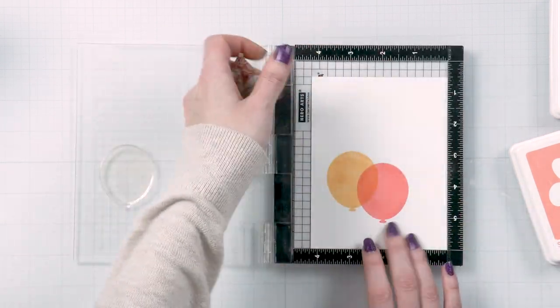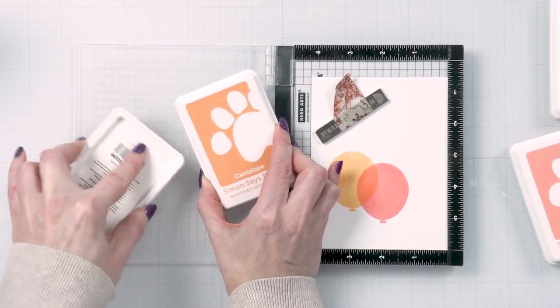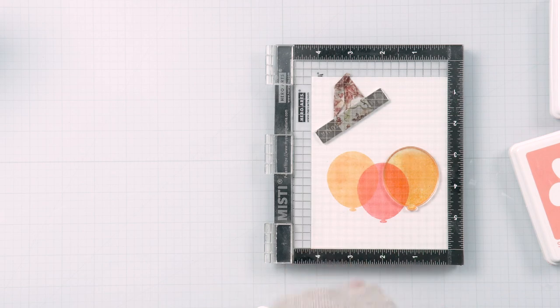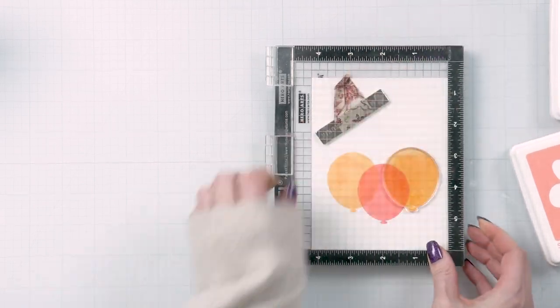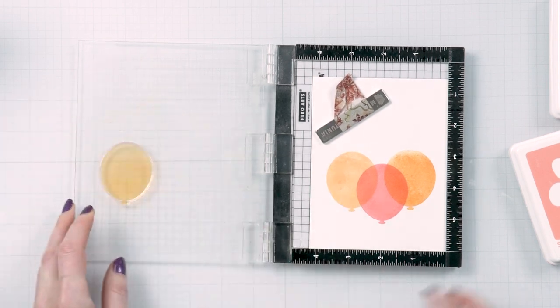Next, I again repositioned the balloon and stamped it onto the panel using the next ink color, which was cantaloupe. It is a very pretty yellow orange color, not too vibrant, not too orange, but just perfect for this feminine card.